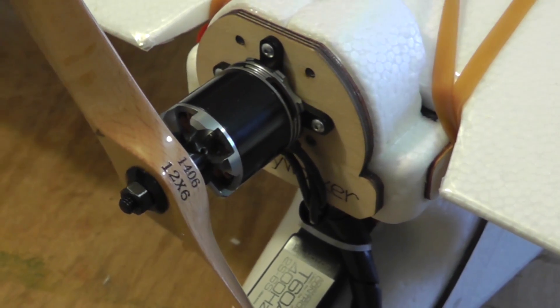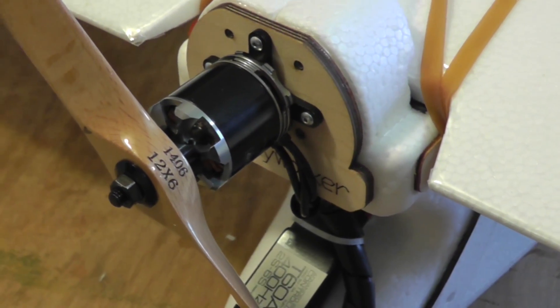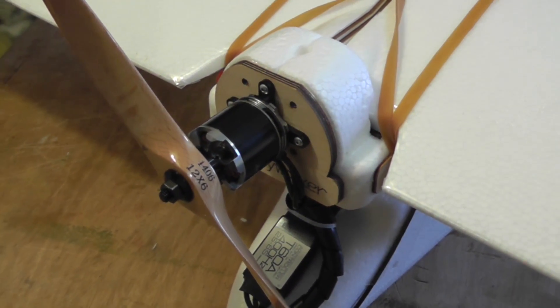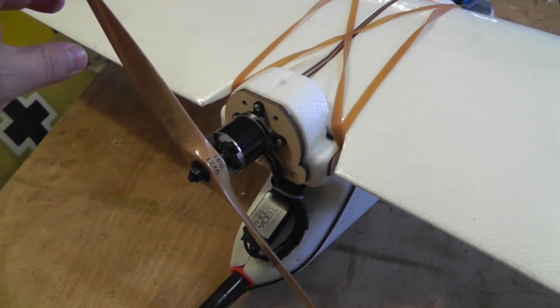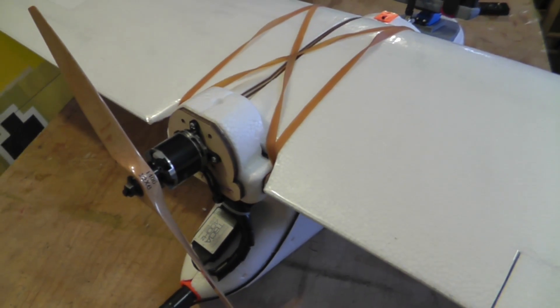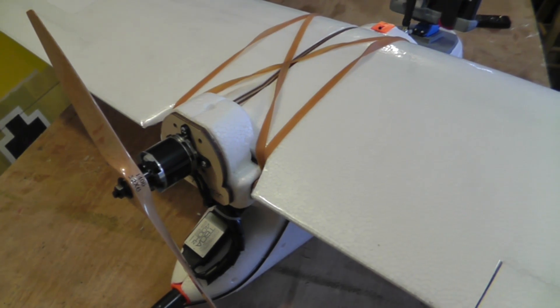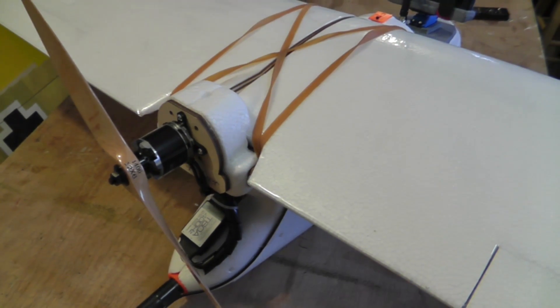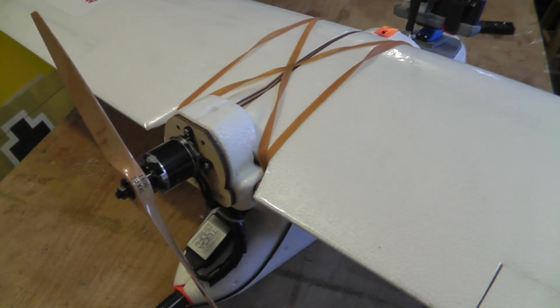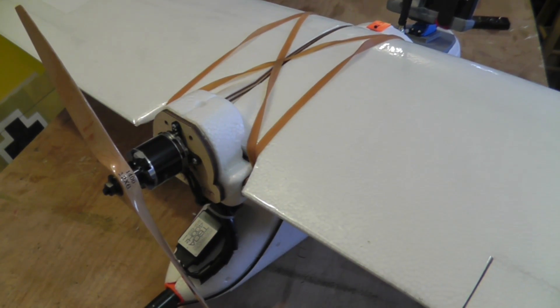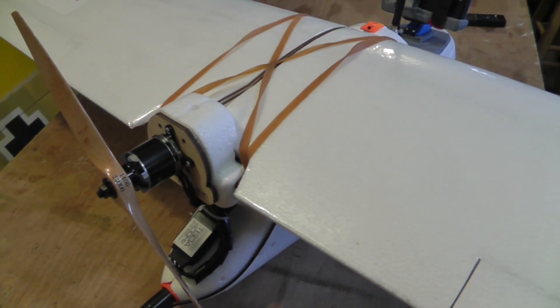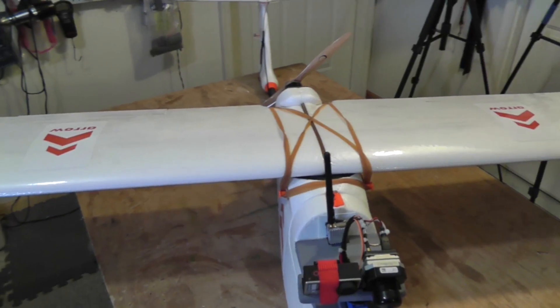But of course, the bigger the propeller, the more efficient in general things will become. And this 12x6 ZOWAR is amongst all the props that I have tested so far, the most efficient. It produces at full power, static thrust, when you just hold the plane in place, it will draw about 550 watts of power. And that, with a 4S system, equates to about between 30 and 40 amps of current draw.